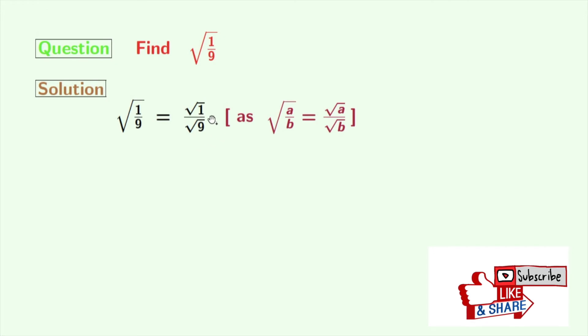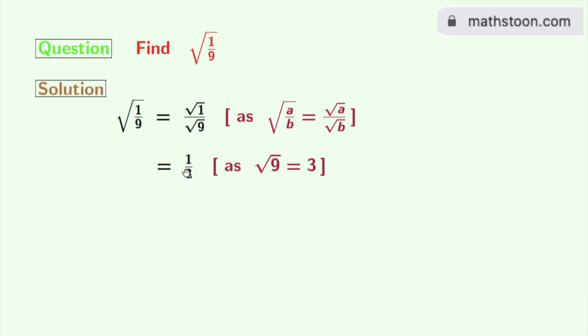Now we all know that square root of 1 is 1 and square root of 9 is 3. So from this we get 1 by 3. So finally, we get the value of square root of 1 by 9 which is 1 by 3. And this is our final answer.